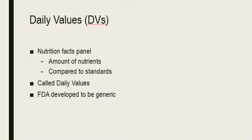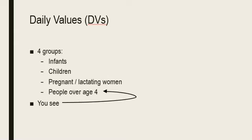The Nutrition Facts Panel on a food label compares the amount of nutrients in that food item with a set of standards called Daily Values. The Food and Drug Administration (FDA) created these standards because the DRIs are age and gender specific — it is unrealistic to have a different Nutrition Facts Panel for each age and gender on every package. The daily values are separated into four different groups: infants, children, pregnant and lactating women, and people over the age of four. Most food products use the group for people over age four, unless it is a food specifically for infants, children, or pregnant and lactating women.